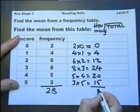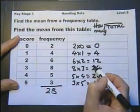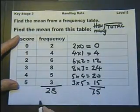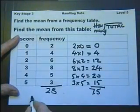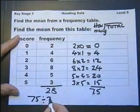6, 10, 15, carry the 1. 1, 2, 3, 4, 5, 6, 7. So the mean is 75 divided by 28.